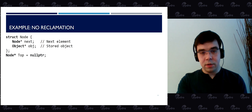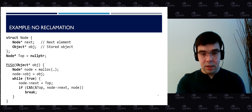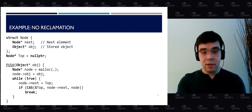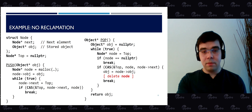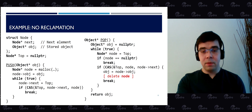The node data structure has a pointer to the next element, an object stored inside the node, and a pointer to the top of the stack. The push operation is simple: allocate a node, store an object, then in a loop try to do CAS updating the top pointer — if it fails, repeat. Similarly, the pop operation reads the top pointer in a loop, tries to update top to the next element, and if it succeeds, returns the object from the retrieved node.